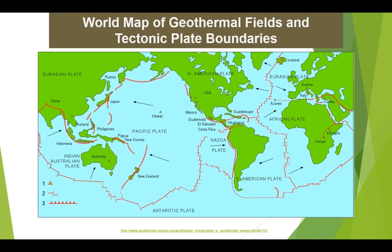High temperature geothermal energy is sourced from regions around tectonic plate boundaries where volcanic and seismic activities are lively. This means the Earth's crust is fractured, which allows geothermal energy to be readily accessible. This picture from the International Geothermal Association gives an overall view of the layout of these plates and where the highest concentration of geothermal energy is available.